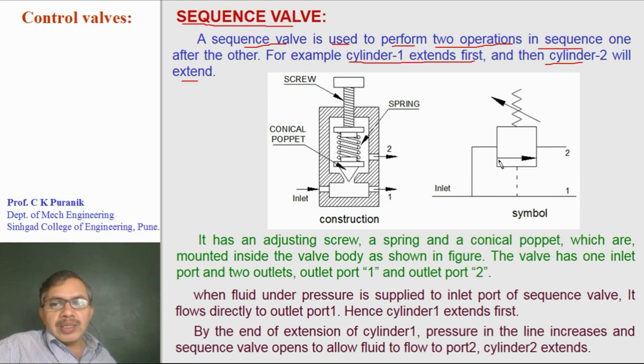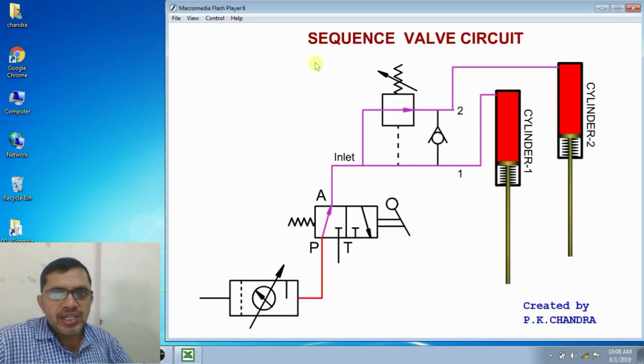In normal position, the sequence valve is closed. This is normally closed type of valve. When the pressure in the line increases, the pressure exerts force on the conical poppet and hence the conical poppet will move out to make the connection from inlet to outlet like this. Let us understand the functioning of sequence valve in the circuit.